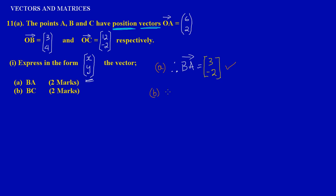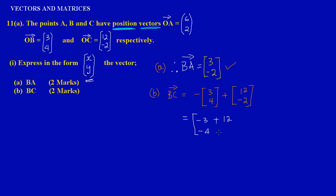So they're asking us to calculate vector BC. That is equal to: OB was positive, so it automatically becomes negative 3 over 4. Plus I will have OC, which is 12, negative 2. Cleaning this up: negative 3 plus 12 gives positive 9, and negative 4 minus 2 gives negative 6. So this would be our answer.